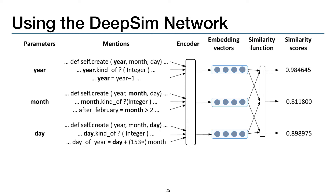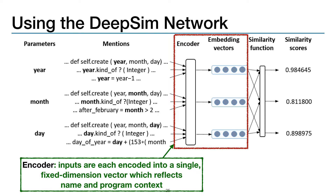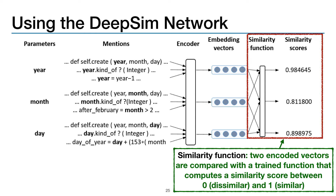Here's the DeepSim network at a high level. On the left we see the inputs — each parameter gets its own input, which is really the method's source code with special markers indicating positions of the relevant argument. For example, for the parameter year, we mark all the positions in which year occurs in the method's definition. We then run those inputs through the encoder stage, which encodes each parameter into a single fixed-dimensional vector reflecting both the name and program context. Finally, we run pairs of those vectors through our trained similarity function, which computes a similarity score between 0 and 1. Scores closer to 1 indicate the network's belief that two inputs have the same type; scores closer to 0 indicate different types. In this case, we get three similarity scores all above 0.8, suggesting the network's belief that these inputs all have the same type.